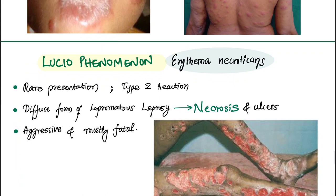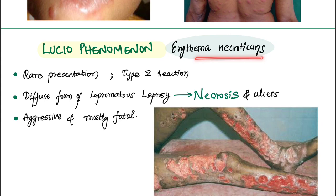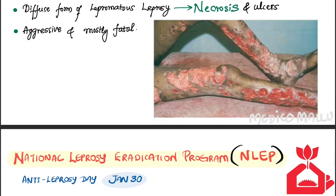Lucio phenomenon, also known as erythema necroticans, is a rare presentation — a Type 2 reaction in a diffuse form of leprosy where there is necrosis of peripheral tissue, forming ulcers with degradation and death of tissue. It is the most aggressive and fatal complication of leprosy.